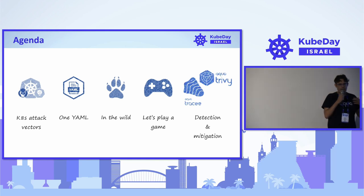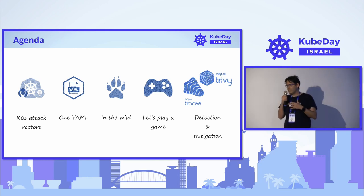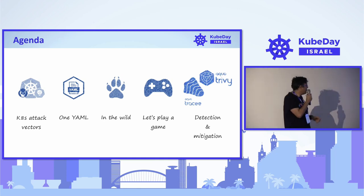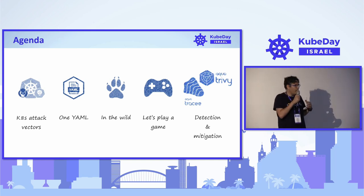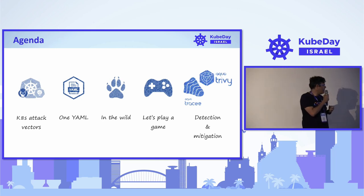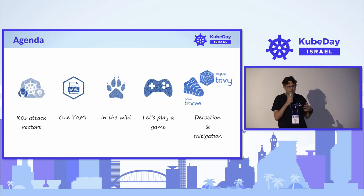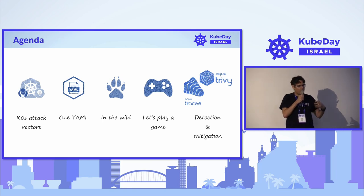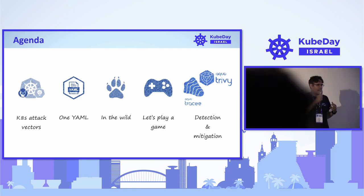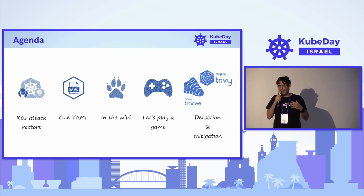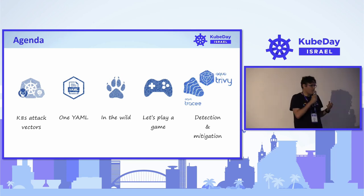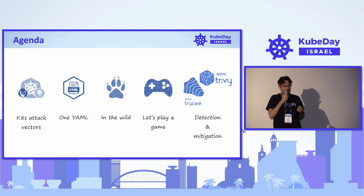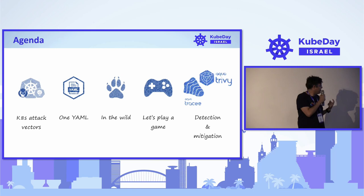Today we are going to talk about research we've been conducting over the past three months, and it revolves around Kubernetes. We'll start by exploring the Kubernetes attack surface, then talk about how one single YAML can lead to catastrophic results. We'll show use cases from the wild of companies that were completely exposed, attacks from our honeypot environments, play a game to detect malware in a running Kubernetes cluster, and show ways to detect and mitigate these events.